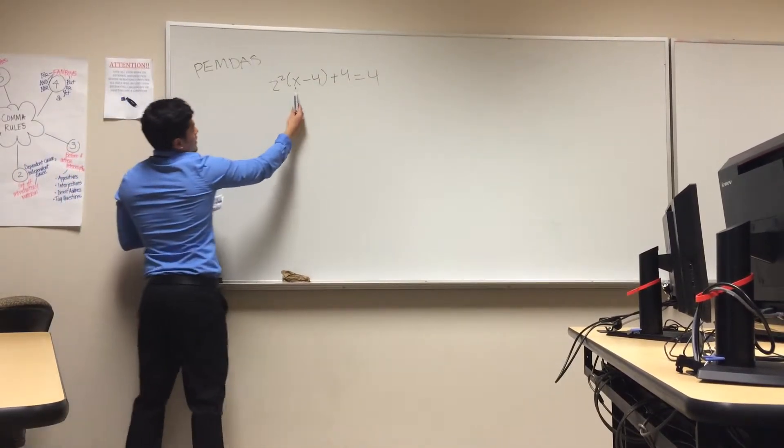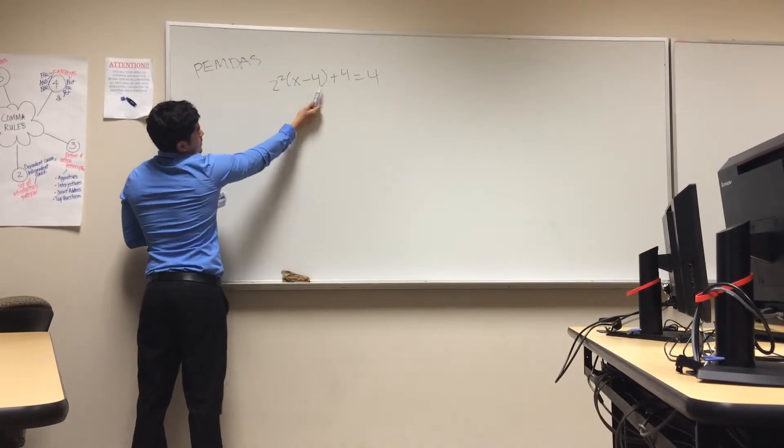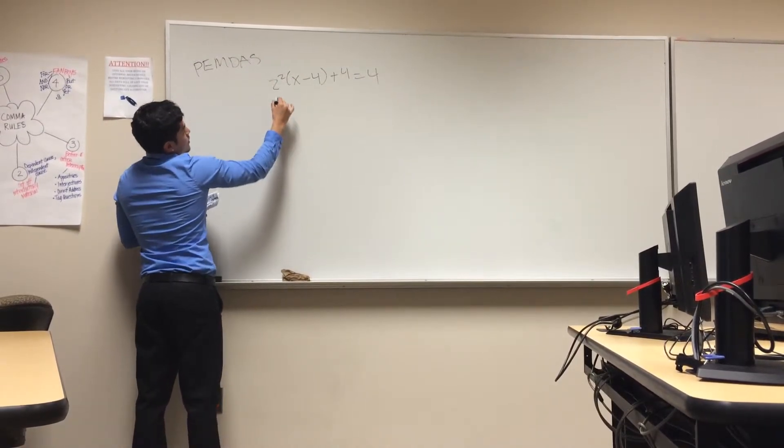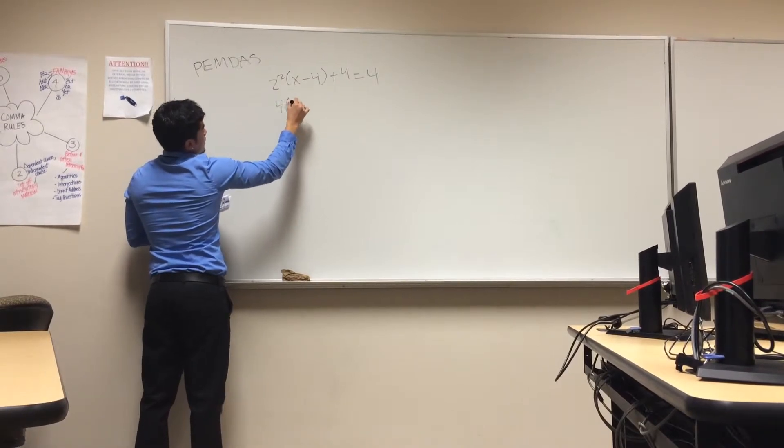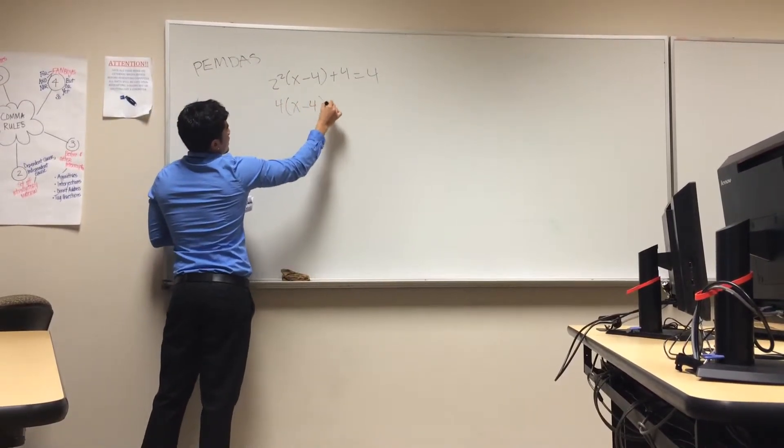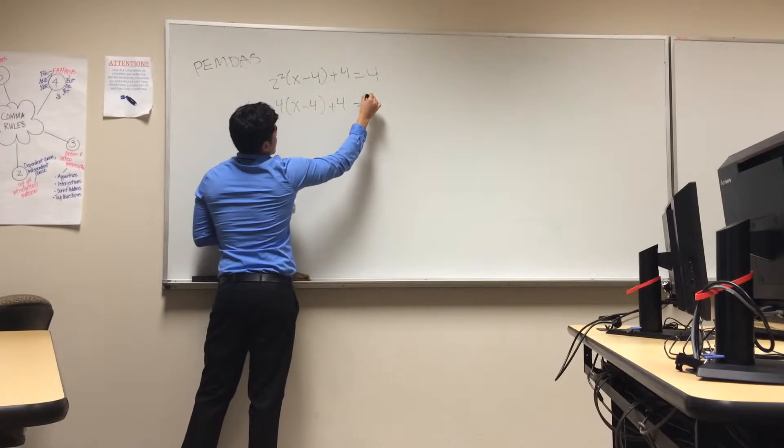In this case, you do parentheses first, but there's nothing to do in there. So, you move on to the exponent. So, you do 4x minus 4 plus 4 equals 4.